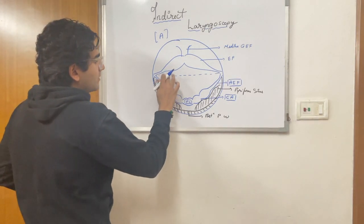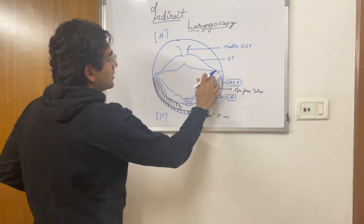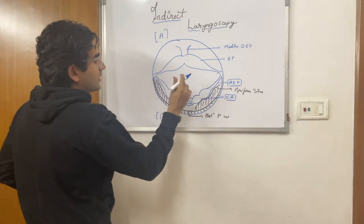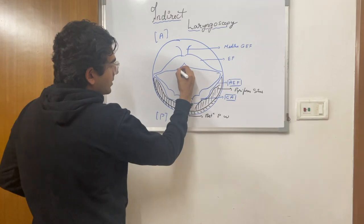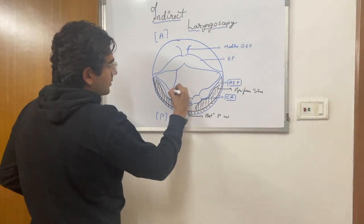In the center, we can erase this imaginary line now. In the center, we will be able to see the vocal folds.